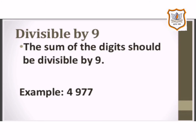The next rule is divisible by 9. If the sum of the digits of a number is a multiple of 9, then the given number is divisible by 9. For example, 4977: if we add 4 plus 9 plus 7 plus 7, we get 27, which is divisible by 9. So we can say that 4977 is also divisible by 9.